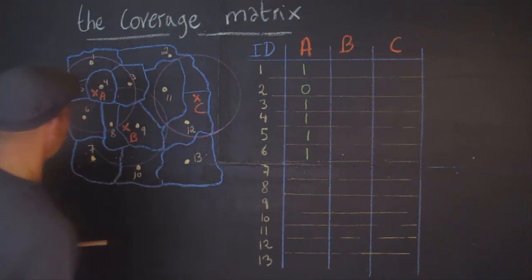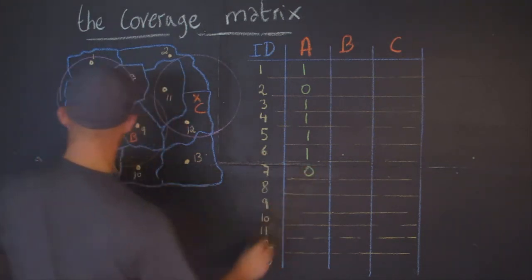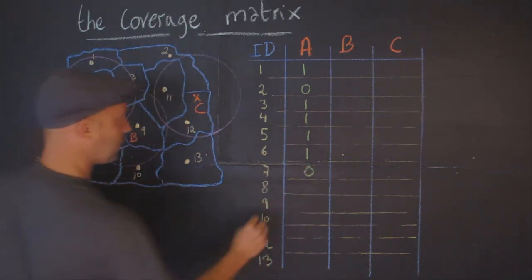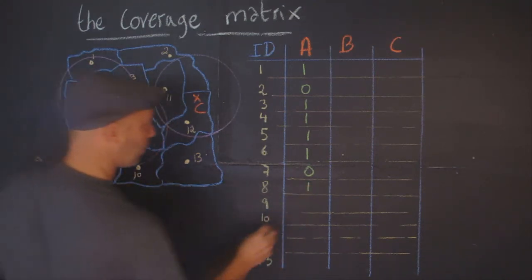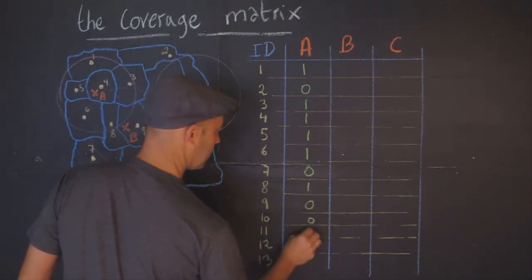How about seven? Seven is outside, with zero. How about eight? Eight is inside, okay, one. And then I believe that all of the other ones are zero.